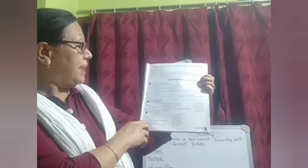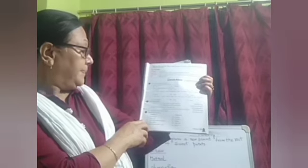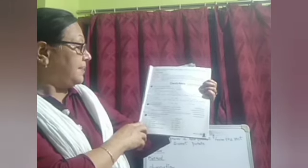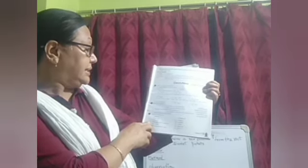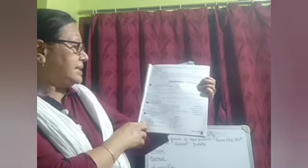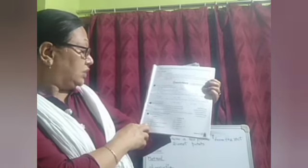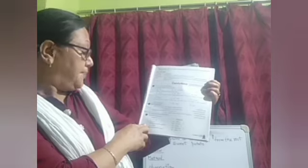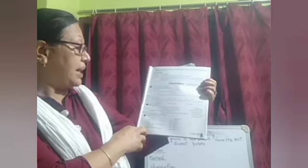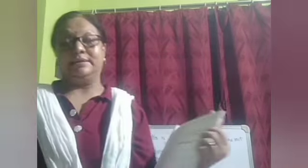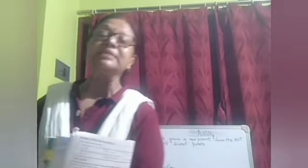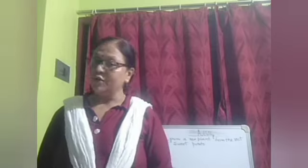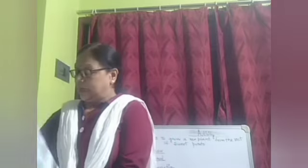Next, question C: match the following. Curry will match with cotton. Rabi crop will match with gram. Seed dispersed by animal matches with xanthium. The baby plant matches with embryo. And seed dispersed by water matches with coconut, as all fibrous seeds are dispersed by the current of water.